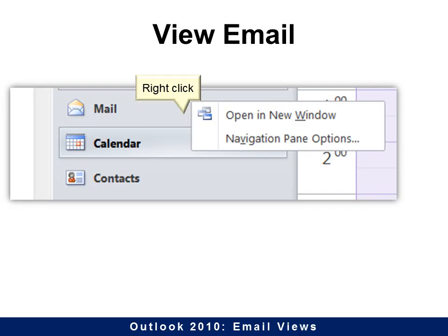The first great tip that a lot of people don't know is to simply right-click on an email and you can open it in a new window. So you don't have to have just the calendar or just email — you can have both.